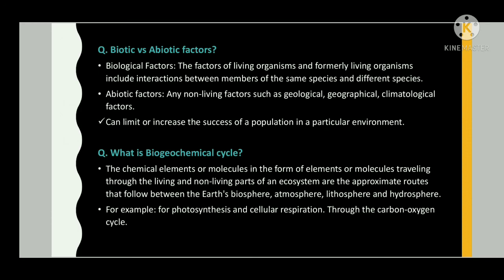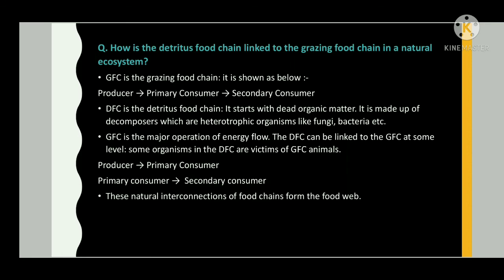How is the detritus food chain linked to the grazing food chain in a natural ecosystem? The grazing food chain (GFC) goes: producer → primary consumer → secondary consumer. The detritus food chain (DFC) starts with dead organic matter and is made up of decomposers, which are heterotrophic organisms like fungi and bacteria. The GFC is the major pathway of energy flow. The DFC can be linked to the GFC at some level — some organisms in the DFC become prey in the GFC. These natural interconnections of food chains form the food web.